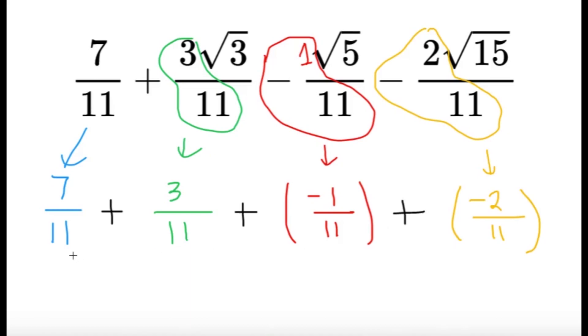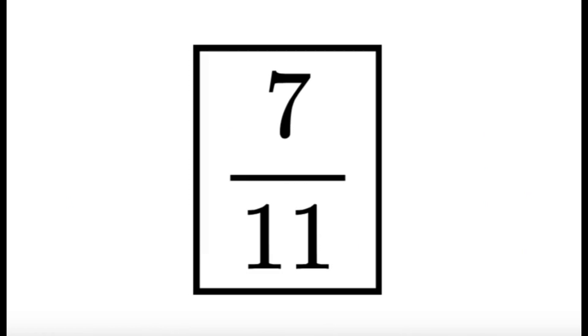So we have 7 over 11 plus 3 over 11 plus negative 1 over 11 plus negative 2 over 11. Combining all of them, we're going to get the answer to be 7 over 11. And this will be our final answer.